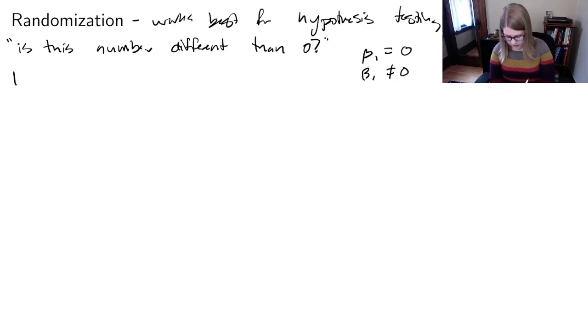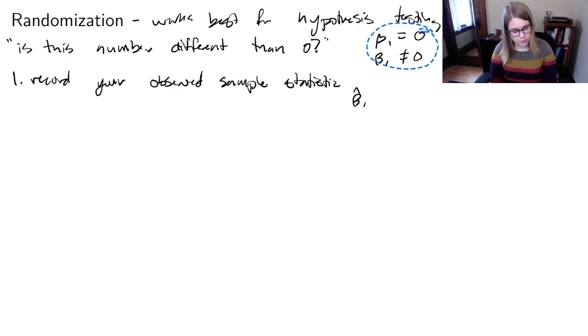Here's how it works. Step 1 is always to record your observed sample statistic, which in the case of this class is just about almost always beta 1 hat. So we record our observed value; we're going to use that later on.